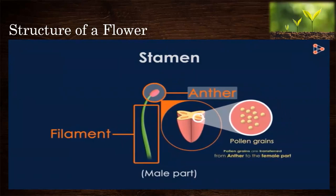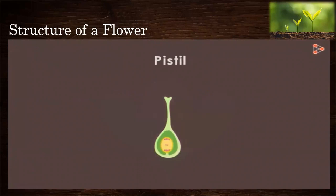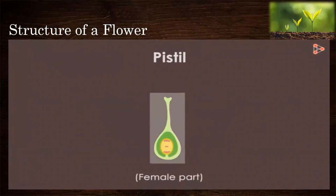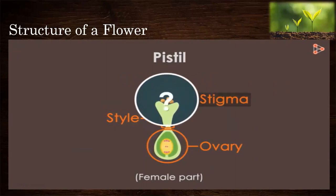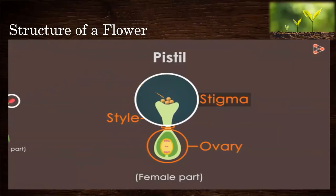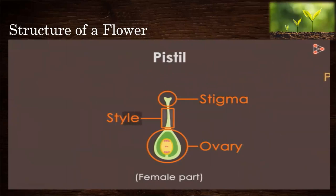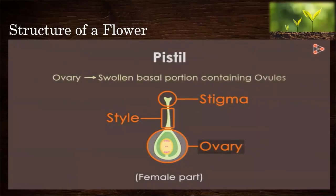Pollen grains are transferred from the anther to the female part of the same or different flower. The female part is the pistil, which has three distinct sub-parts: the stigma, the style, and the ovary. The stigma is the landing place for pollen, where pollen from the anther lands and germinates — a process called pollination. The style is a slender stalk that holds up the stigma and connects it with the ovary, which is the swollen basal part containing the ovules.